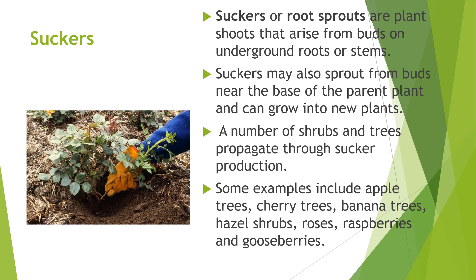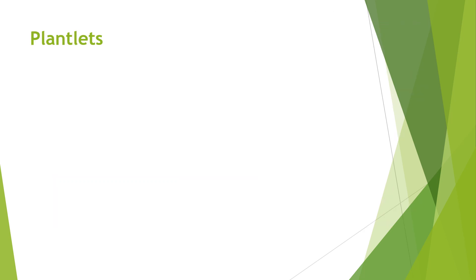Suckers or root sprouts are plant shoots that arise from buds on underground roots or stems. Suckers may also sprout from buds near the base of the parent plant and can grow into new plants. A number of shrubs and trees propagate through sucker production. Some examples include apple trees, cherry trees, banana trees, hazel shrubs, roses, raspberries, and gooseberries.